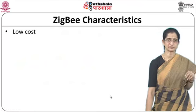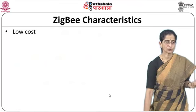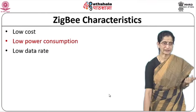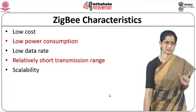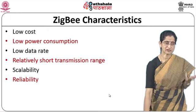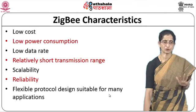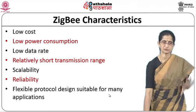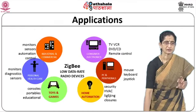The characteristics of the ZigBee network include very low cost, low power consumption, low data rate, relatively short transmission range, high scalability, reliable data transfer, and flexible protocol design suitable for many applications. Applications include control of light switches, thermostats, and appliances, where ZigBee is expected to be used.